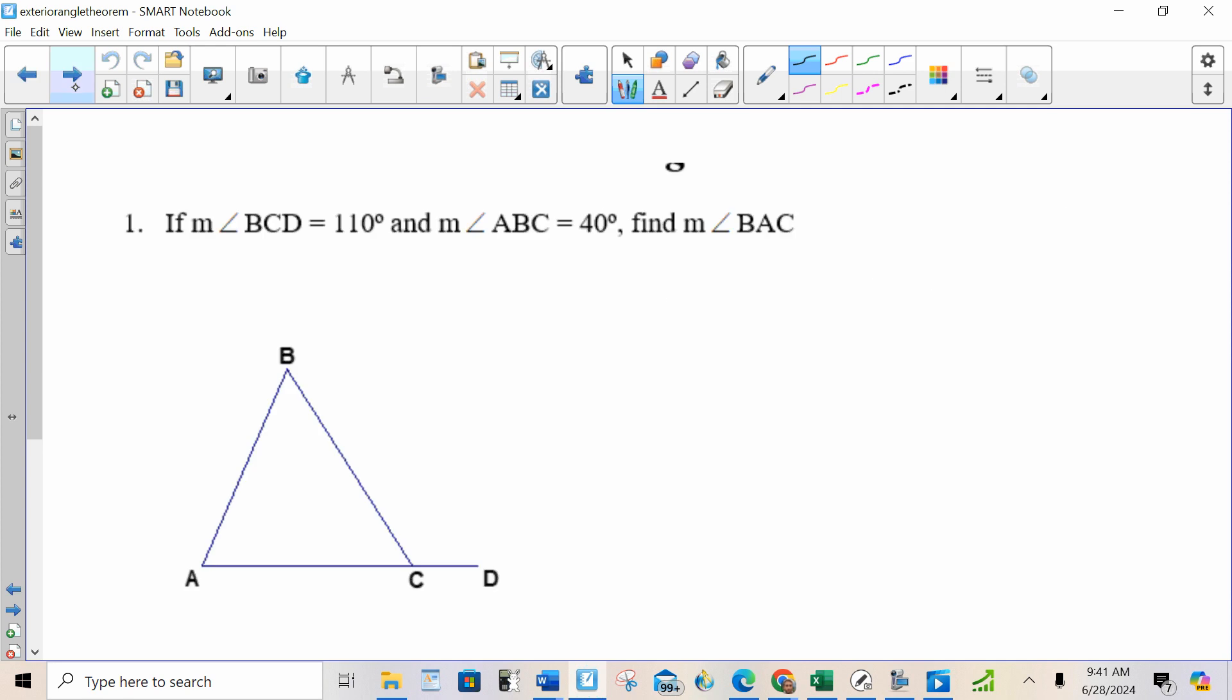Here is what that means. If angle BCD equals 110 degrees and angle ABC equals 40 degrees, find the measure of angle BAC.